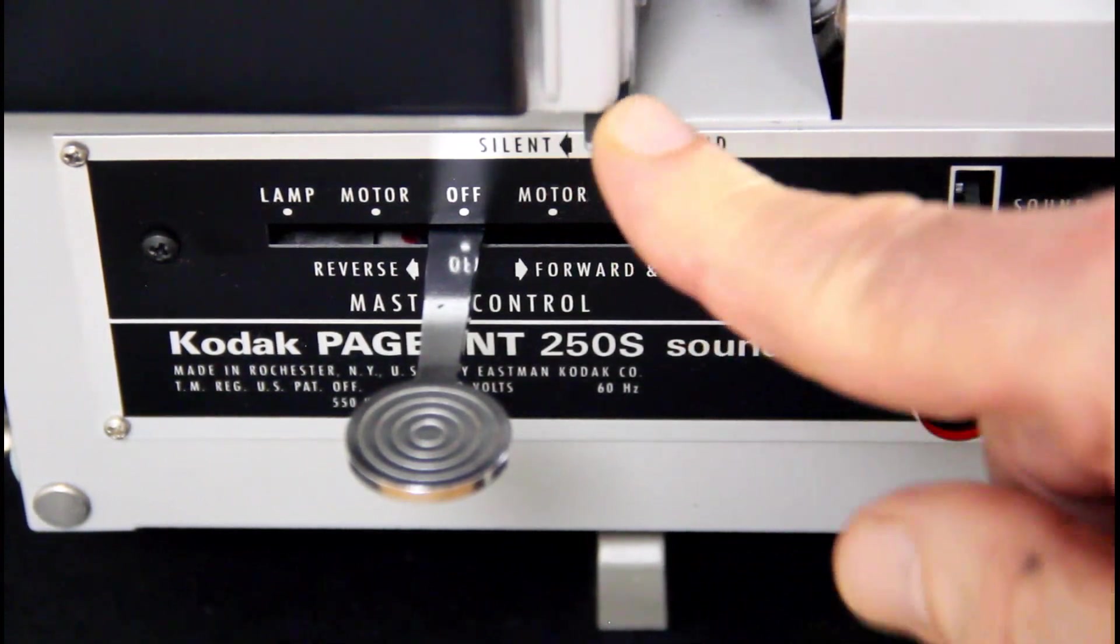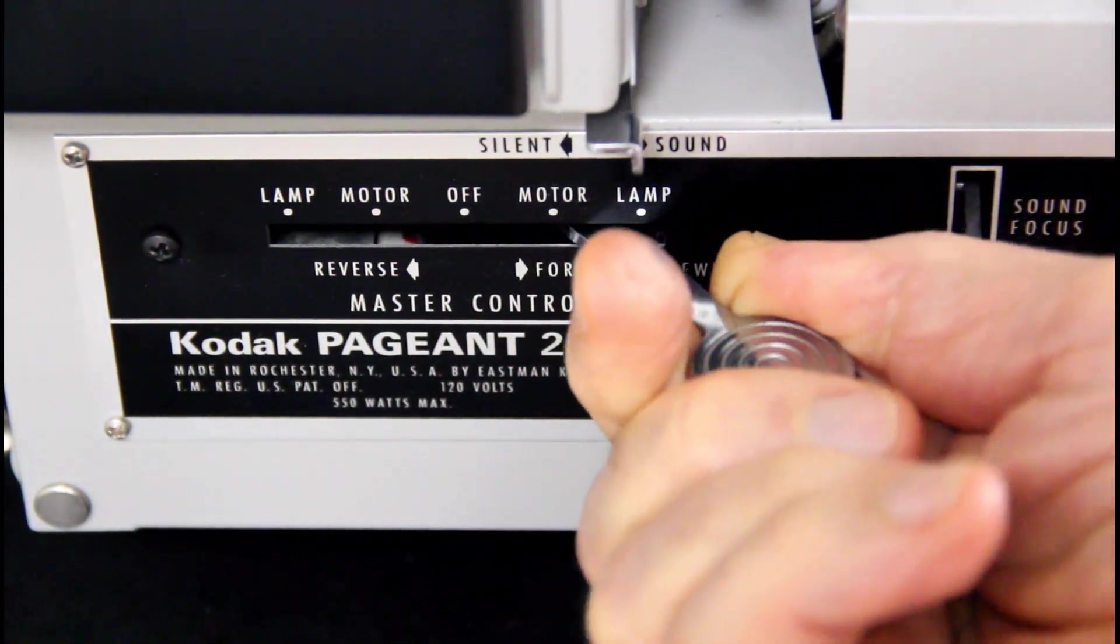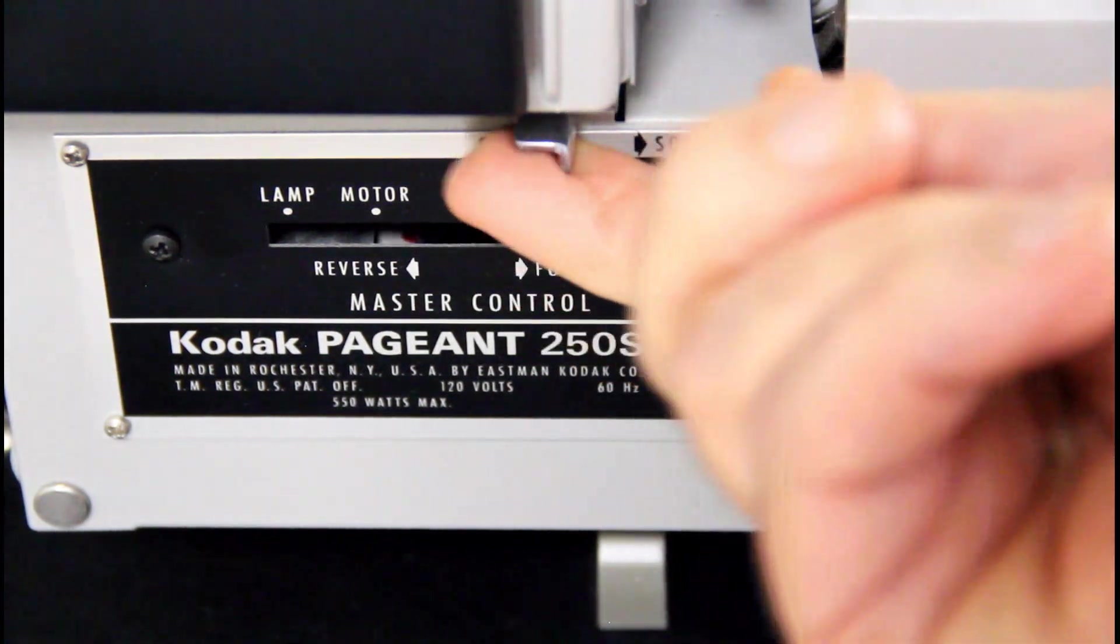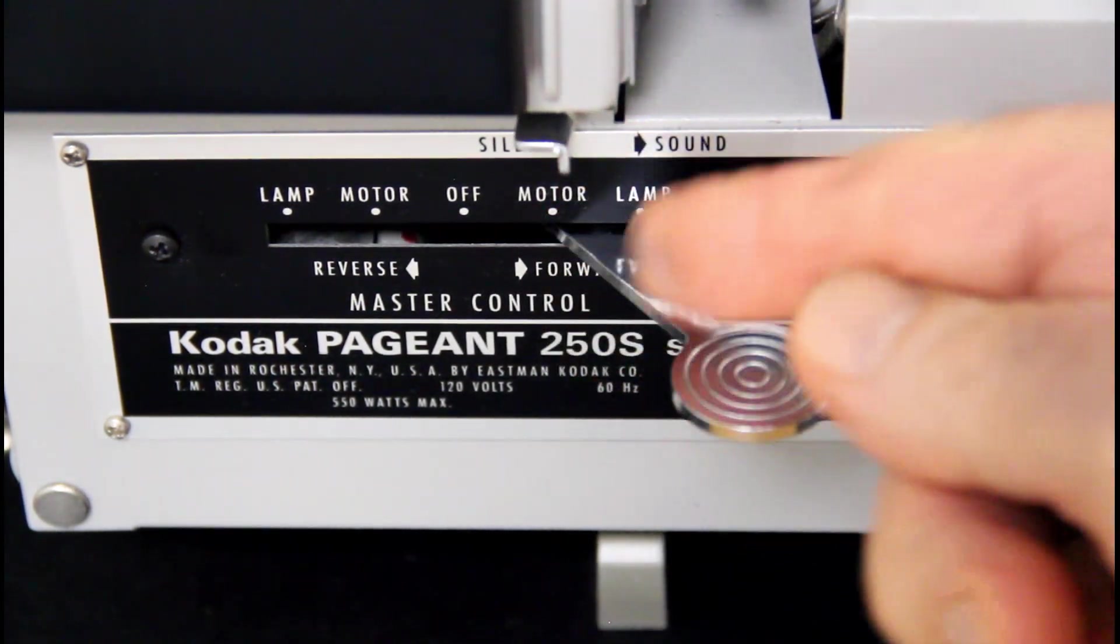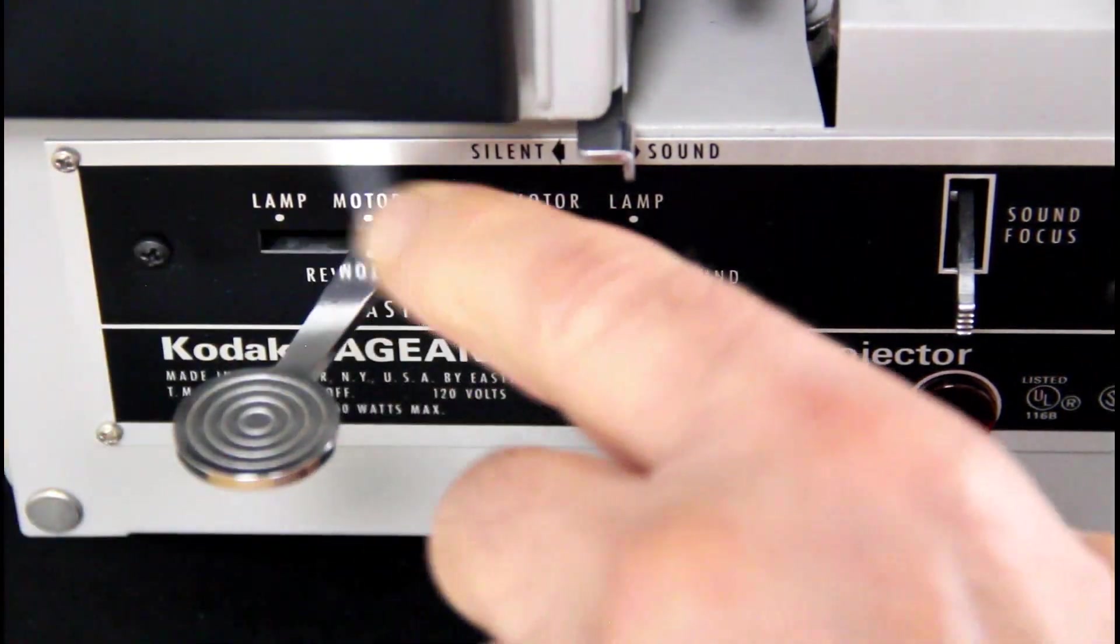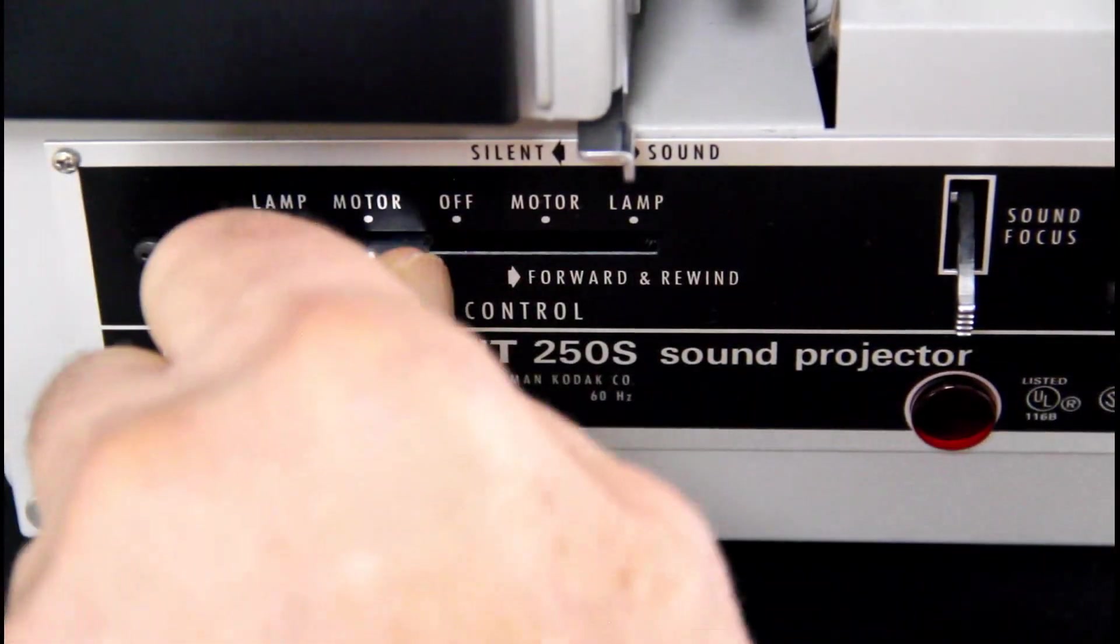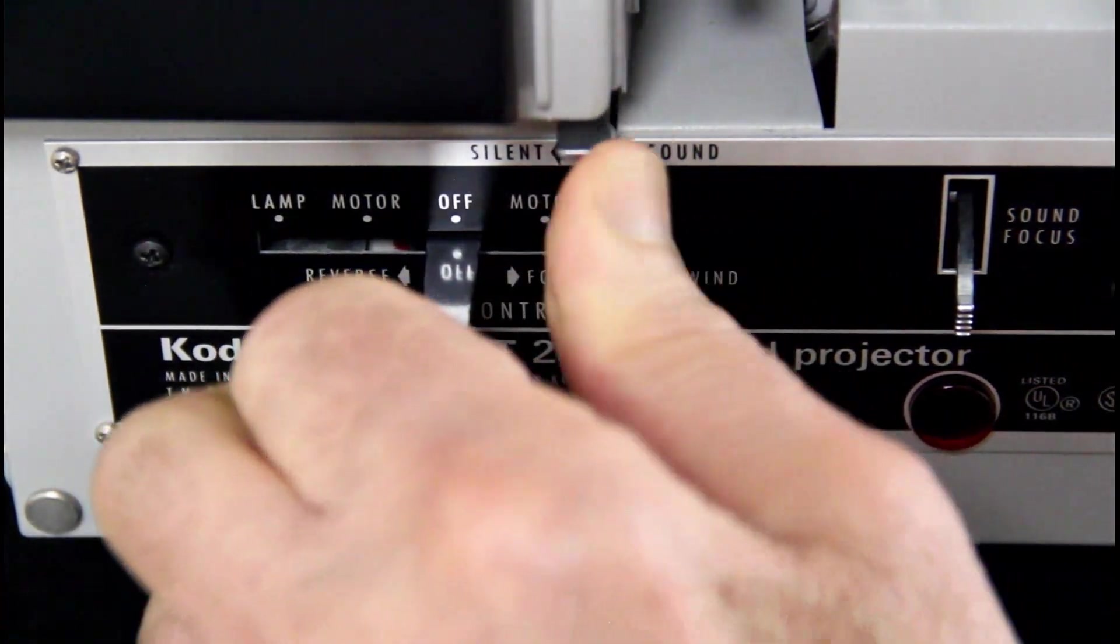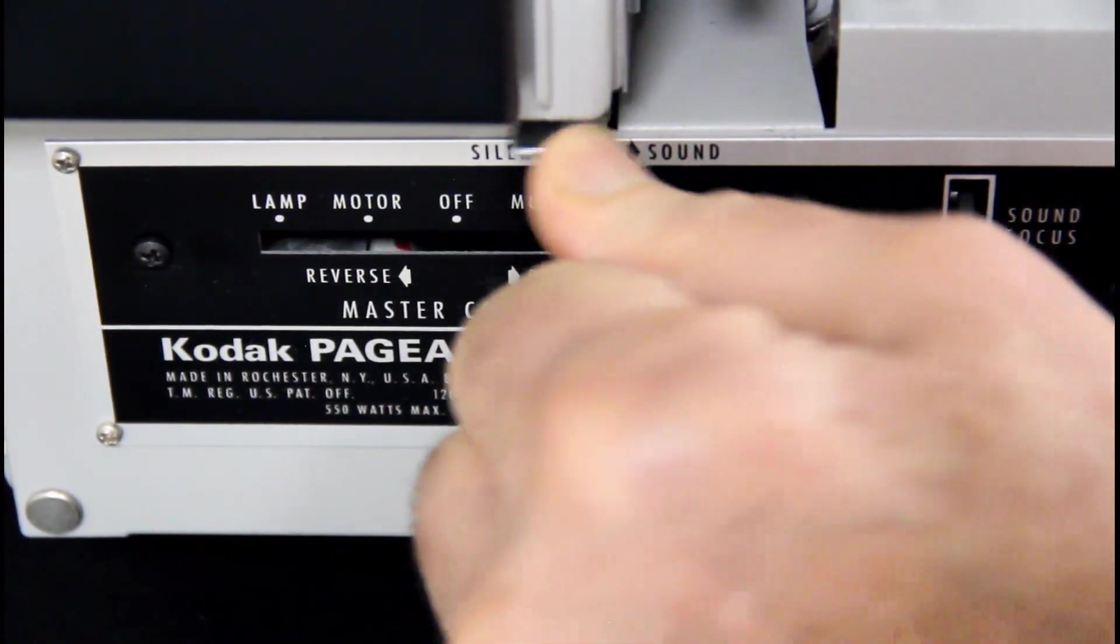There's a switch that says sound on this side and silent movies on this side. You cannot move this lever until you move the switch to forward position, then you can move it. If I have it in rewind, you can't do anything with this lever, whether it's motor or lamp, doesn't make any difference. It has to be on sound movies, either motor or lamp, and then you can switch it.